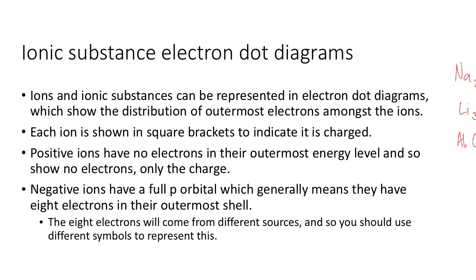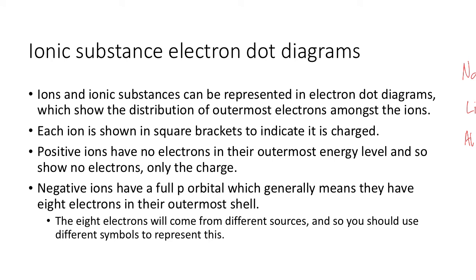Ionic substances and their electron dot diagrams. Ions in ionic substances can be represented by electron dot diagrams, which show the distribution of the outermost electrons amongst the ions. Each ion is shown in square brackets because square brackets indicate charge. Positive ions have no electrons shown in their outermost energy level because they were all given away to the non-metals. Negative ions, however, have a full p-orbital — generally eight electrons in their outer shell — and you should use different symbols to represent electrons from different sources.